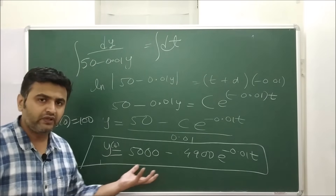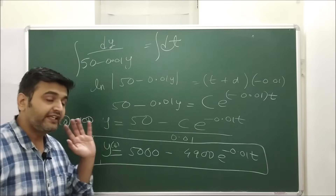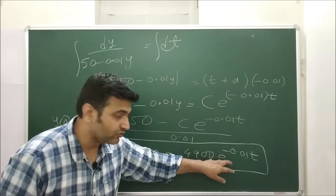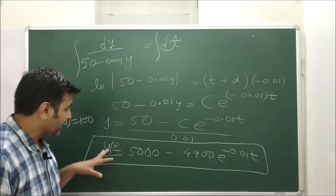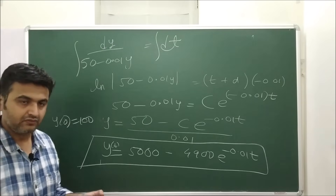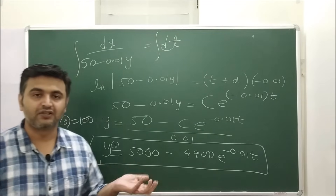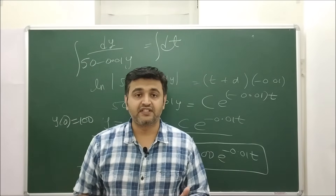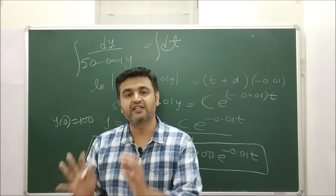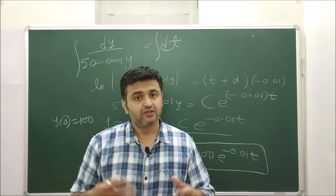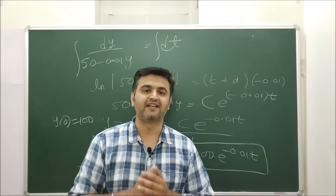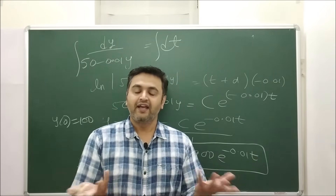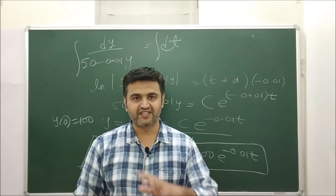As t approaches infinity, the exponential term goes to zero, so the maximum amount of salt the tank can hold is 5000 pounds — it will never exceed that. To summarize: the rate of change equals inflow rate minus outflow rate. Find the inflow rate, find the outflow rate, subtract, solve the differential equation, and you get the answer. If you have any doubts, ask in the comment section; and if everything is clear, please like, share, and subscribe. Thank you.